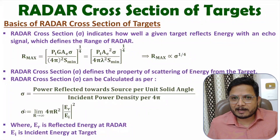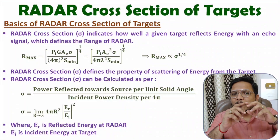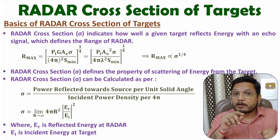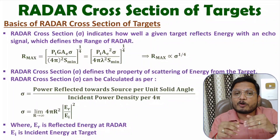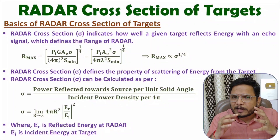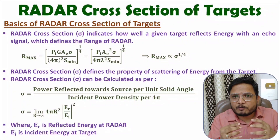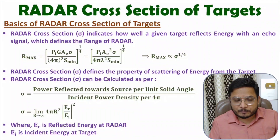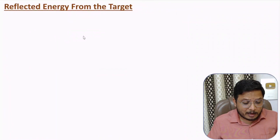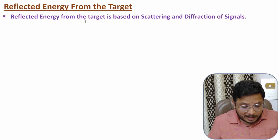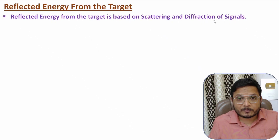Cross section of the target is not directly based on how exactly the object's cross-sectional area is viewed by the radar. It is purely based on how much energy is getting reflected towards the radar. Reflected energy from the target is based on scattering and diffraction, and you need to understand the difference between scattering and diffraction.